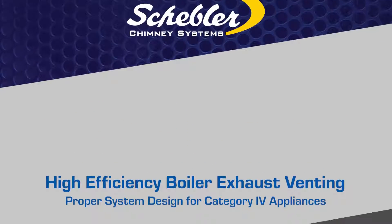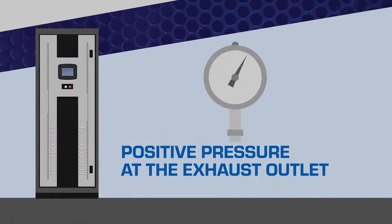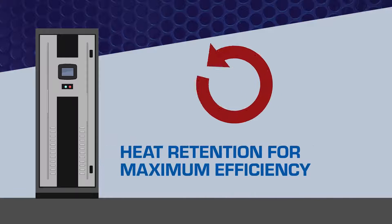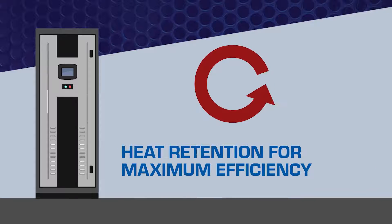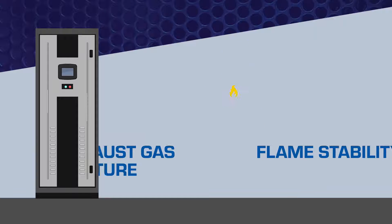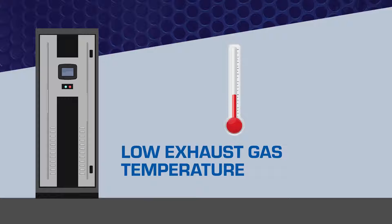Category 4 boilers and hot water heaters are designed to operate at a positive pressure exhaust outlet for heat retention, maximum efficiency, and flame stability. They are also designed to operate with low exhaust gas temperature — below the dew point — to allow the exhaust to condense inside the venting system.